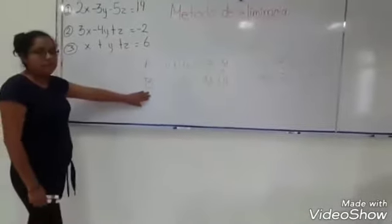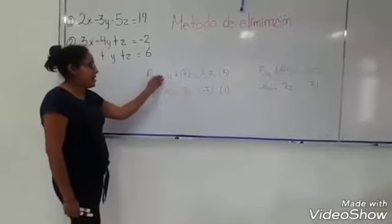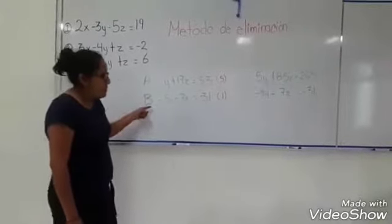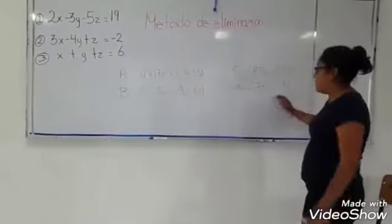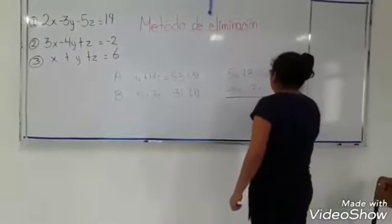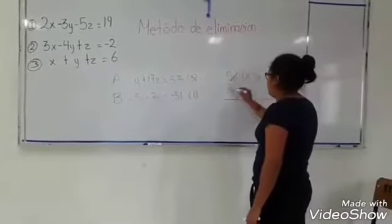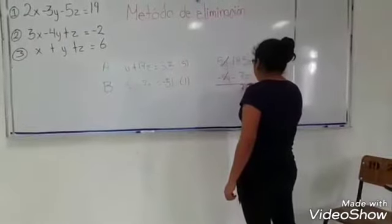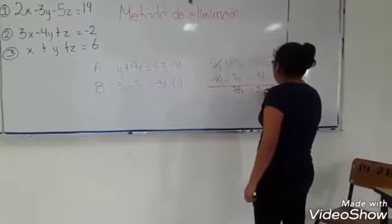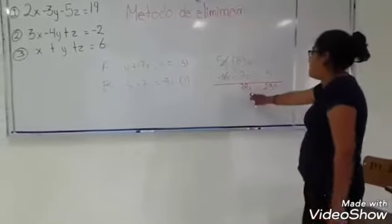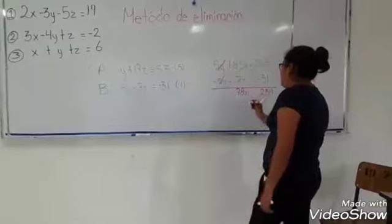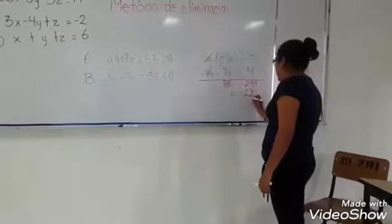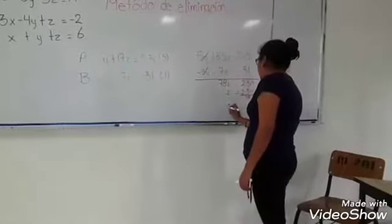Ahora tenemos las ecuaciones A y D que son del sistema resultante y para poder encontrar el valor de Z tenemos que eliminar a Y. De la misma forma tenemos que multiplicar por 5 a cada uno de los términos de la ecuación A y por 1 a la ecuación D. Al realizar la operación, 5Y menos 5Y se cancela, más 85Z menos 7Z es 78Z, que es igual a 234. Para encontrar el valor de Z vamos a despejar: Z es igual a 234 entre 78, que es igual a 3.